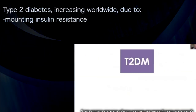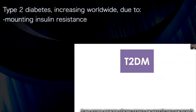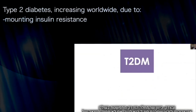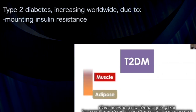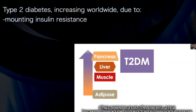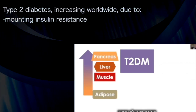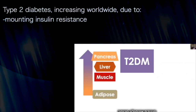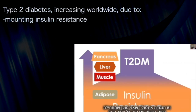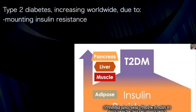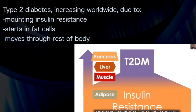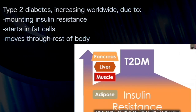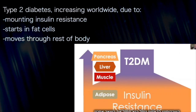In conclusion, we are all rightly worried about type 2 diabetes as it's increasing globally. We need to remember that type 2 diabetes is generally a consequence of mounting insulin resistance, and it's the insulin resistance that starts in the fat cell and then moves through the rest of the body as the first domino falls and tumbles into the subsequent domino.